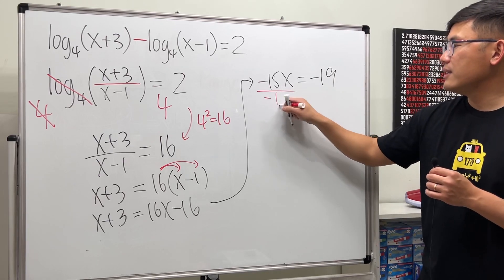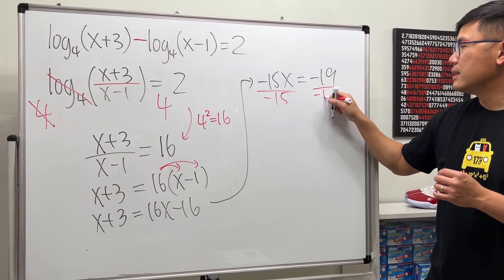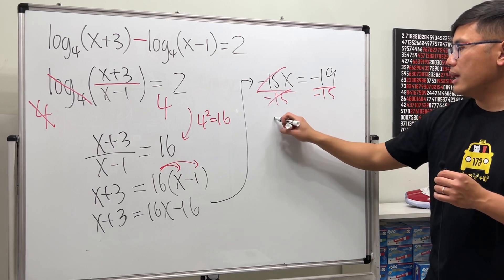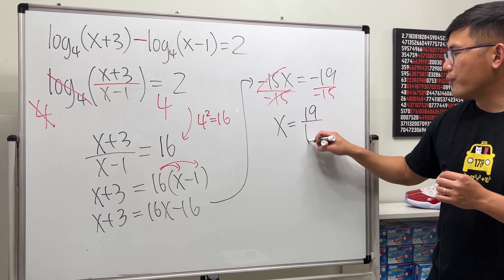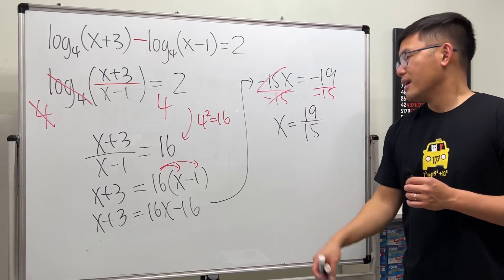Divide -15 on both sides. So we get x equals positive 19/15. This is it.